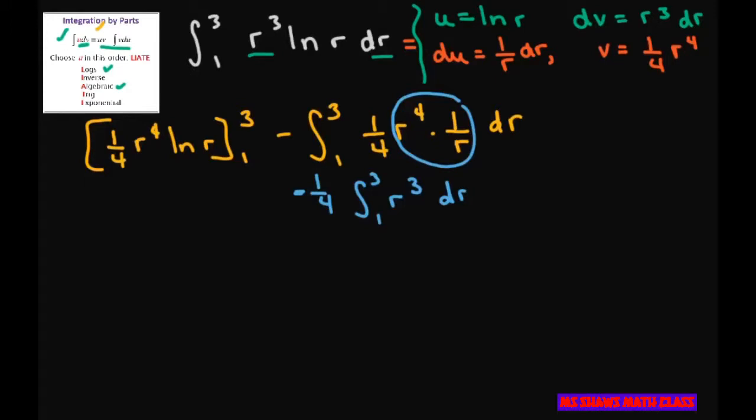Now let's go back from left to right. If you evaluate this and plug in 3, you're going to get 1 fourth times 81 ln 3. Then it's going to be 0 because ln 1 equals 0.